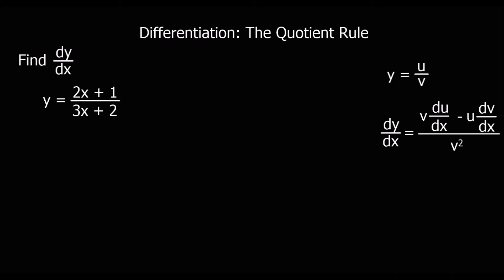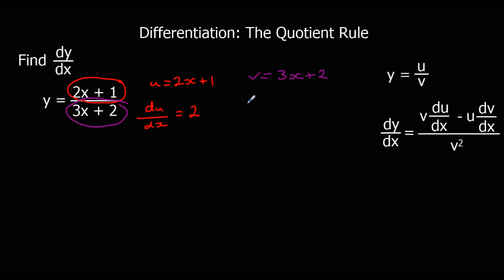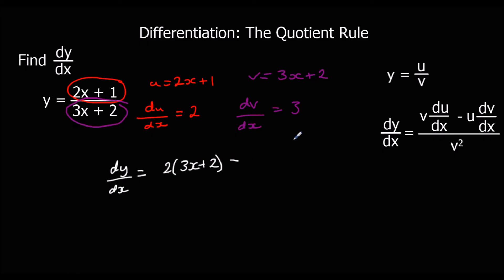Pause the video and give this one a go. So we're going to say u is 2x plus 1 and v is 3x plus 2. So that means du/dx is going to be 2 and dv/dx will be 3. So we're just going to substitute in to the formula now. So dy/dx is v times du/dx, so 2 times 3x plus 2, minus u times dv/dx, so 3 times 2x plus 1, over v squared, so 3x plus 2 squared.